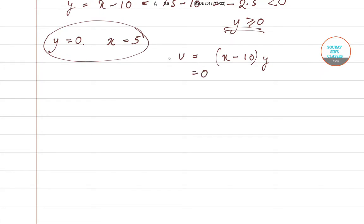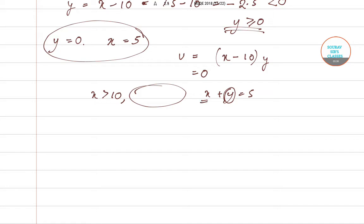For u to be positive, x has to be more than 10. But when x is more than 10, the budget constraint x plus y = 5 is never satisfied — if y = 0, x can be consumed at maximum 5 units. Hence the optimal consumption bundle is x = 5 and y = 0, which is given by option B.